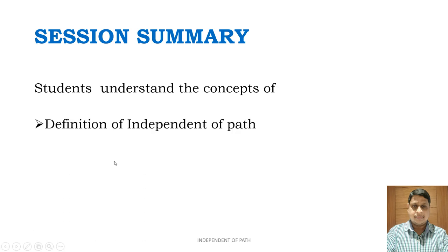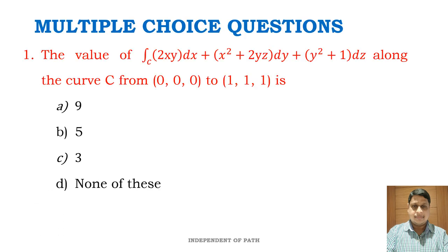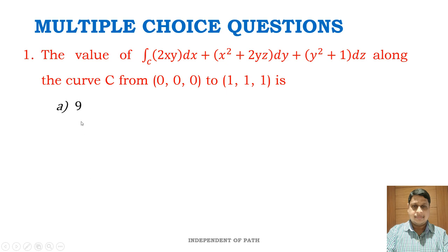Session summary: students understand the concept and definition of independent of path, condition for exactness, and examples. Multiple choice question 1: the value of ∫_C 2xy dx + (x² + 2yz) dy + (y² + 1) dz along C from (0,0,0) to (1,1,1). Options: 9, 5, 3, or none of these. The key answer is option A: 9.